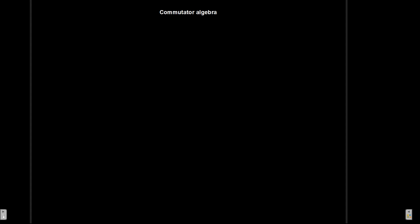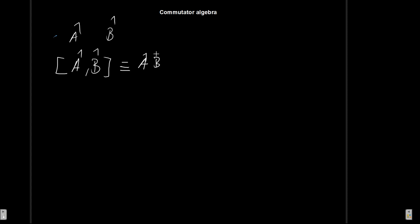In this video we are going to begin talking about commutators and their algebra, so that you know what we can do when they appear in problems later on. First, let us remind you what a commutator is. If we have some operators A and B, their commutator is defined by these square brackets [A, B], and this is by definition A times B minus B times A. If A times B equals B times A, then this is zero and we say that A and B commute.